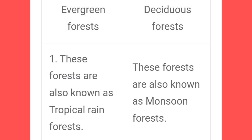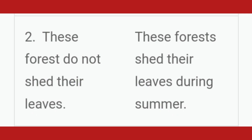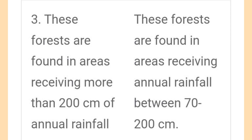Evergreen Forest vs Deciduous Forest. Point 1: Evergreen forests are also known as tropical rainforests; Deciduous forests are also known as monsoon forests. Point 2: Evergreen forests do not shed their leaves; Deciduous forests shed their leaves during summer. Point 3: Evergreen forests are found in areas receiving more than 200 cm of annual rainfall; Deciduous forests are found in areas receiving annual rainfall between 70 and 200 cm.